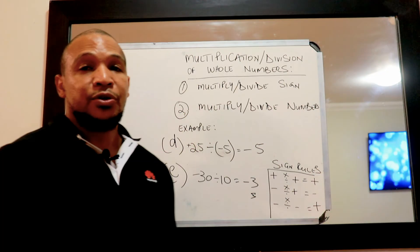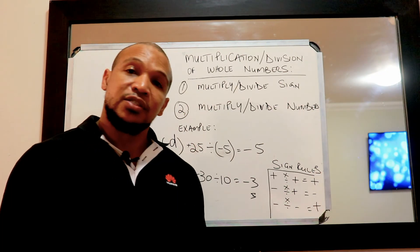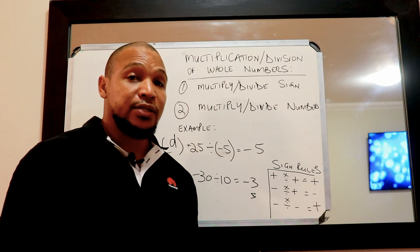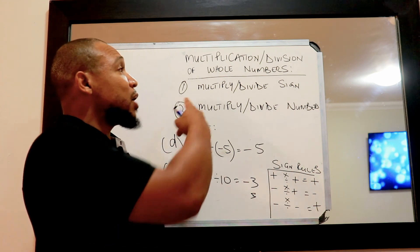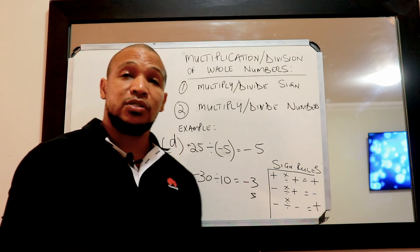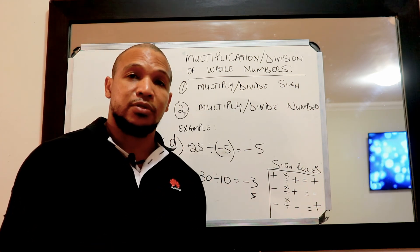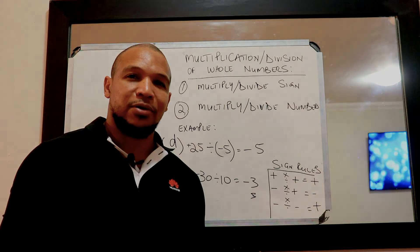So that's how we do it. We first need to look at our sign rules and then we just apply these two simple steps. I'm out.